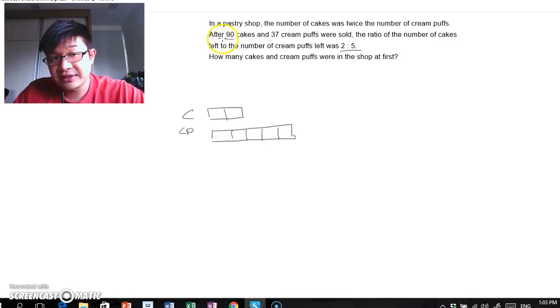So we know that they sold 90 cakes and 37 cream puffs. Now it would be easier to add on the 37 cream puffs here. So I'm just going to add on a smaller box here and I'm going to label it 37.